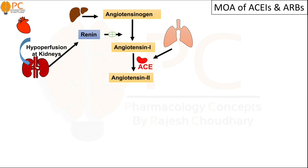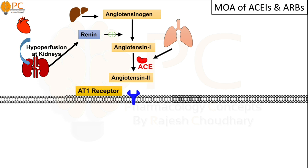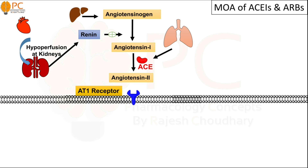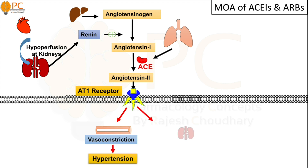Angiotensin 2 activates AT1 receptors — angiotensin type 1 receptors — present on the cell surface of vascular smooth muscle cells. Activation of these receptors causes vasoconstriction, leading to hypertension.